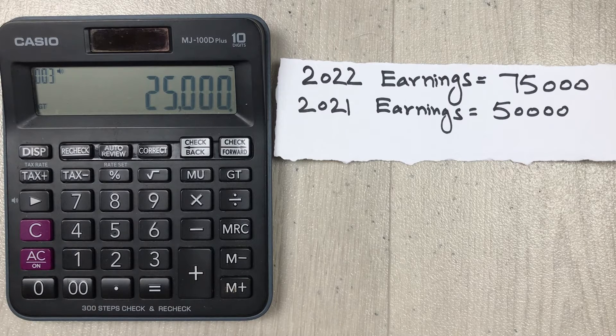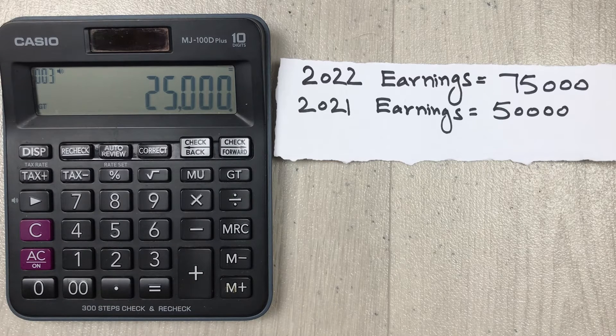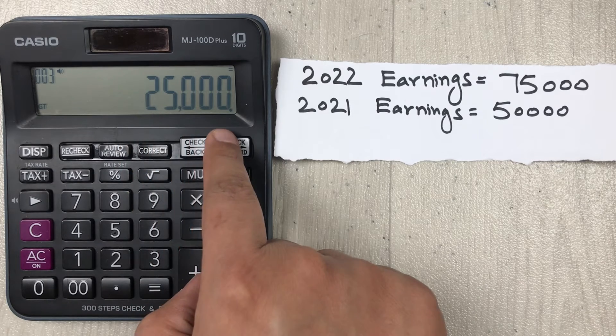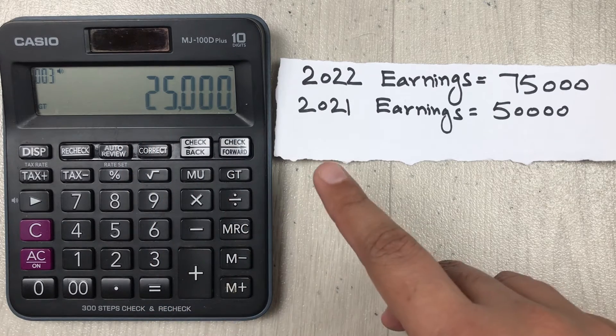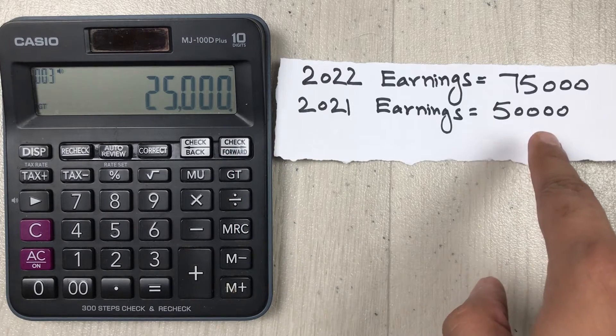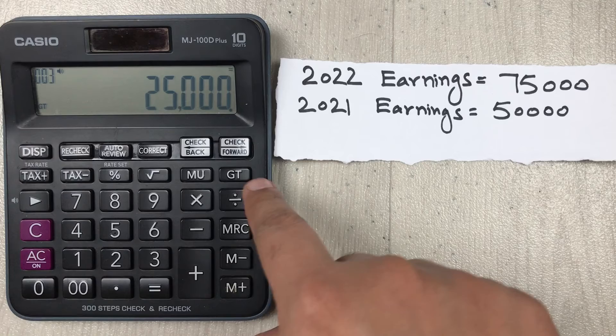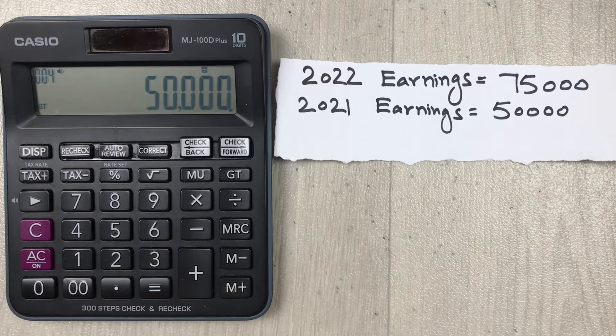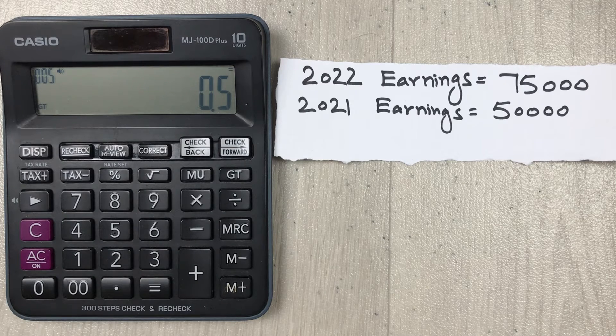Now in the second step, we will divide this 25,000 with the previous year earnings. So we divide 25,000 by 50,000, and then we press the equal button.